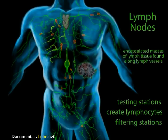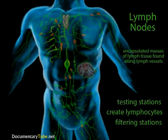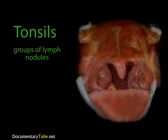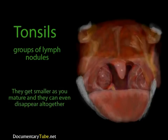Eventually, the lymph is returned to the circulatory system via the right and left subclavian veins in the shoulders, just above the heart. Lymph nodules can be found as single structures or grouped together in small clumps—that's what the tonsils are. They are groups of lymph nodules under the mucous membrane in the throat, forming a protective ring around the throat to protect the body from foreign invaders. If the tonsils get infected, they can become inflamed and enlarged, a condition called tonsillitis. If chronic, the tonsils can be removed in a tonsillectomy. Tonsils tend to get smaller as a person matures and can disappear altogether in an adult.